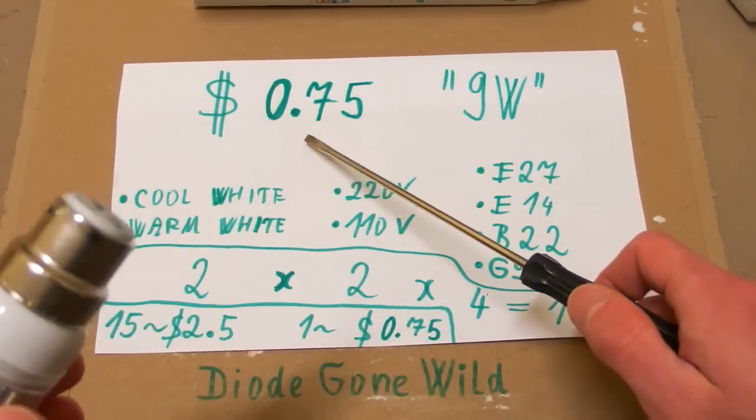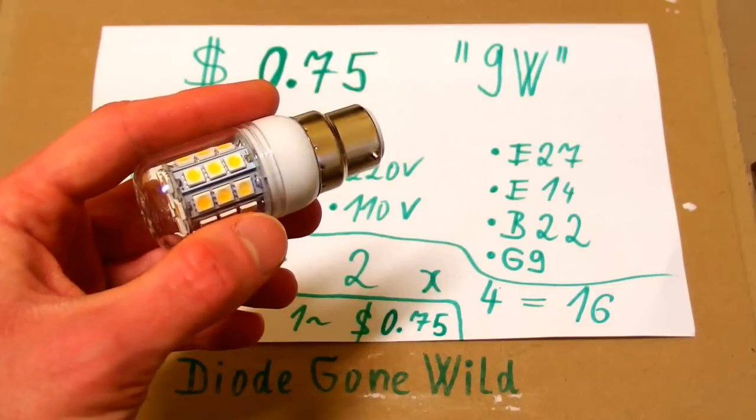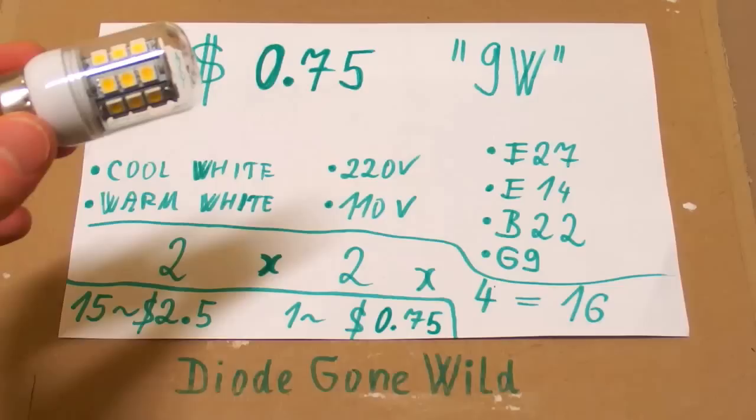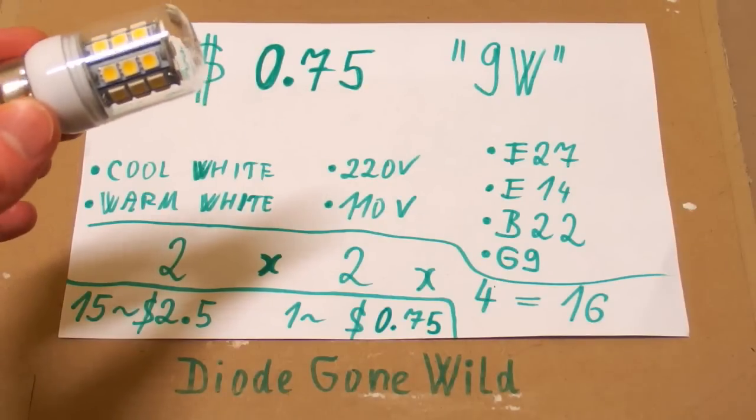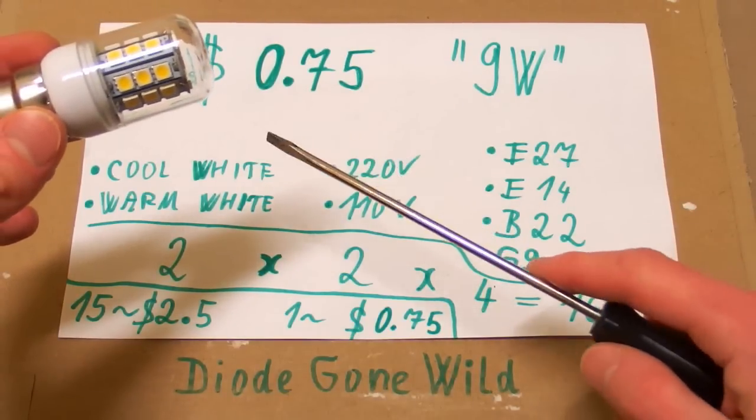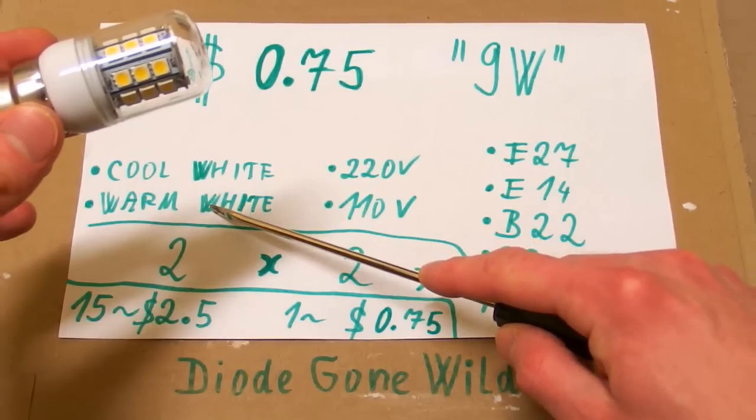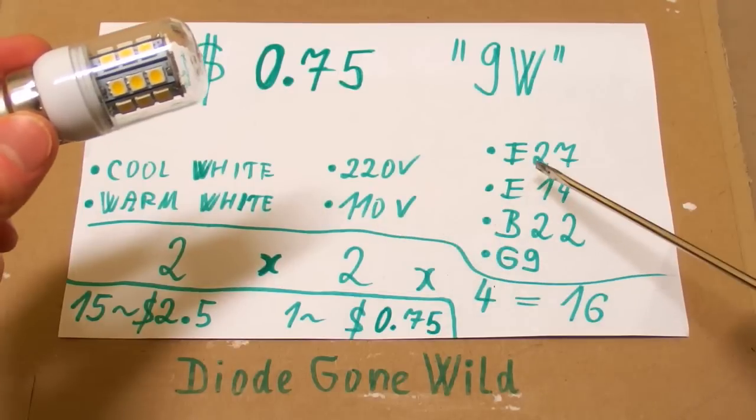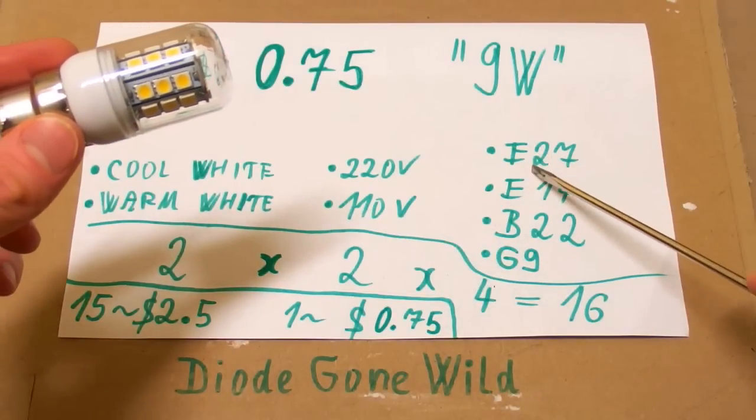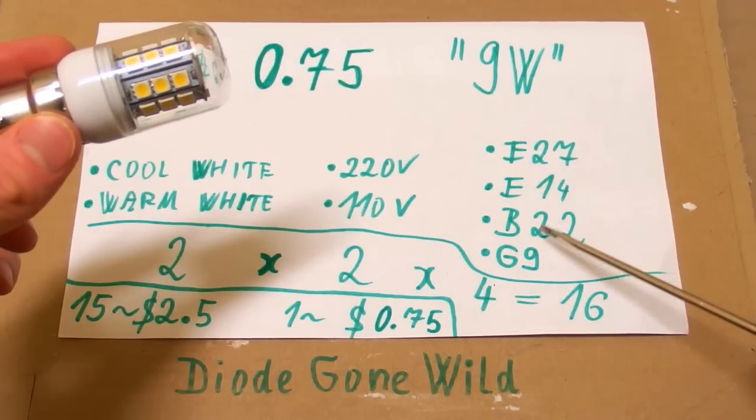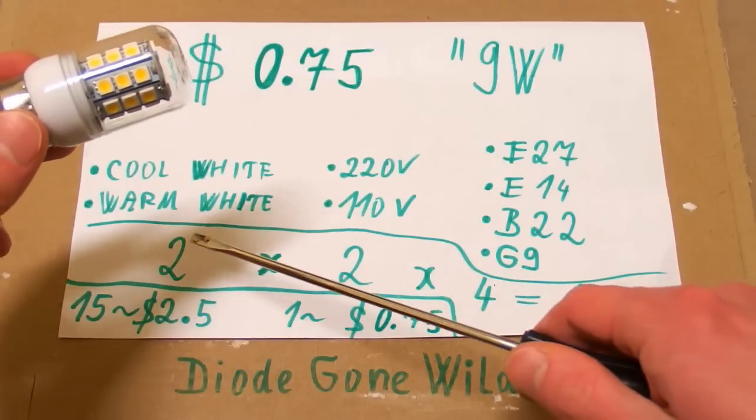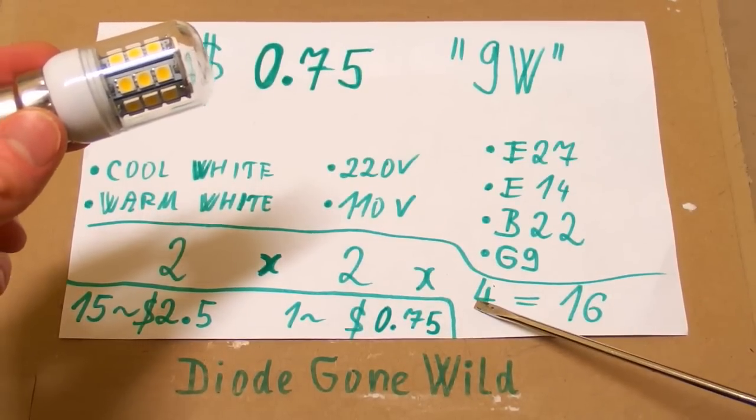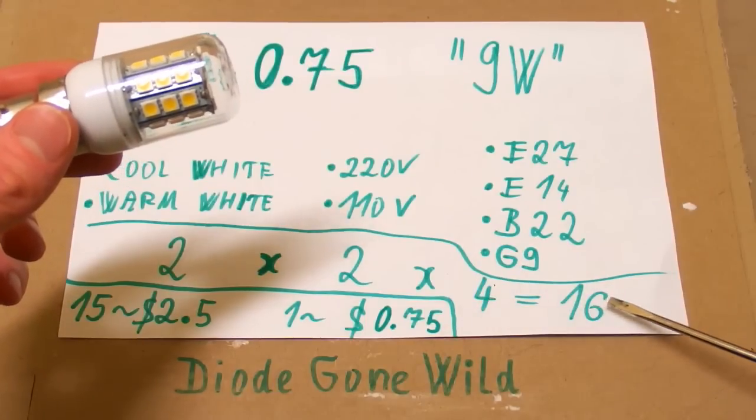It cost me about 75 cents and I got this one so cheap because of the eBay trick I was telling you about in one of my videos. Simply there is a listing with this light bulb on eBay and it comes in different options. In cool white and warm white, in 220 volt and 110 volt version, and in 4 different sockets like E27, E14, B22 and G9. So this is 2 different colors times 2 different voltages times 4 different sockets and in total you have 16 combinations.